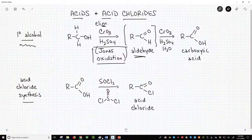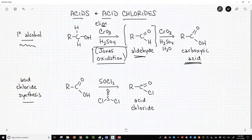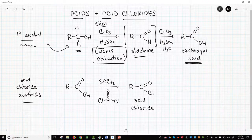The aldehyde undergoes another very rapid oxidation under the acidic conditions and forms the desired carboxylic acid product. There are other ways to make carboxylic acids, but this is a big one because primary alcohols are super common.